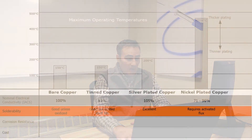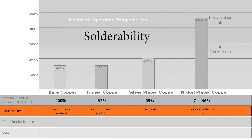How well a conductor solders can be a deciding factor, especially for a cable assembler. Bare copper oxidizes over time, which can affect soldering. Tin copper can solder very well initially, but there is degradation over time requiring the use of some sort of flux.